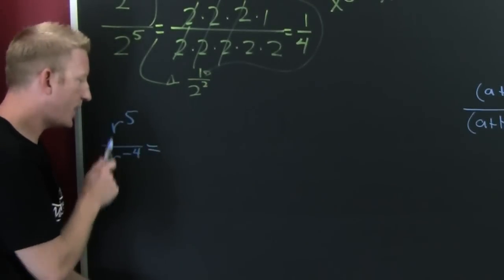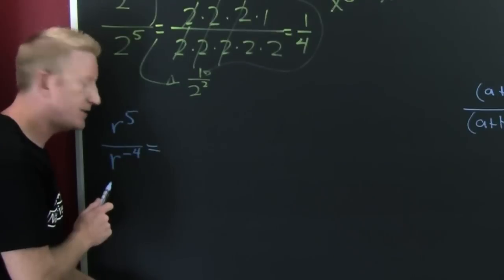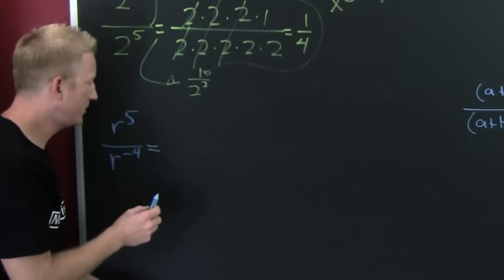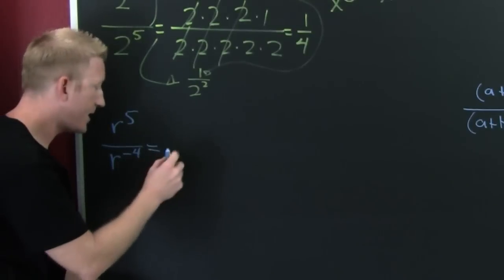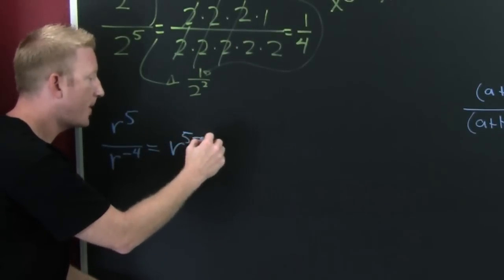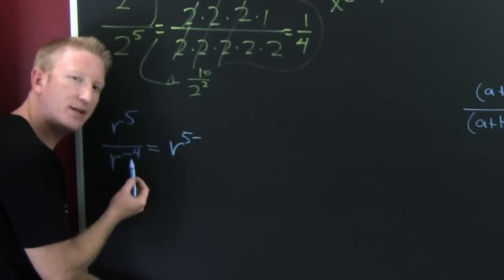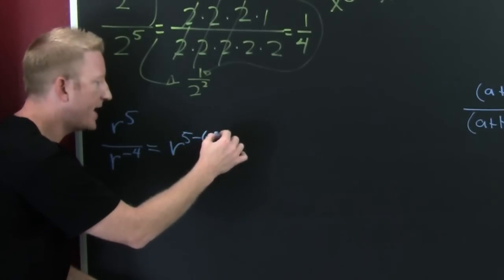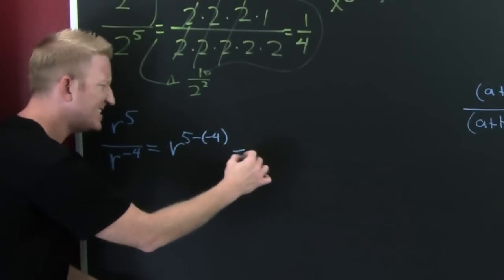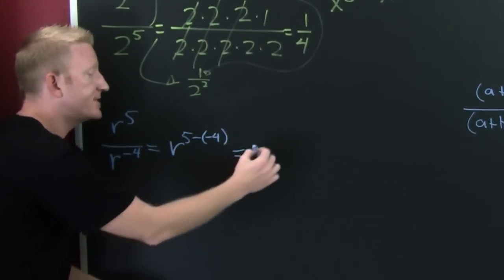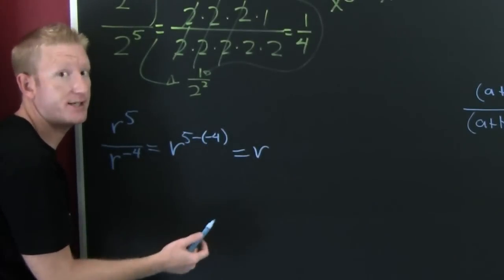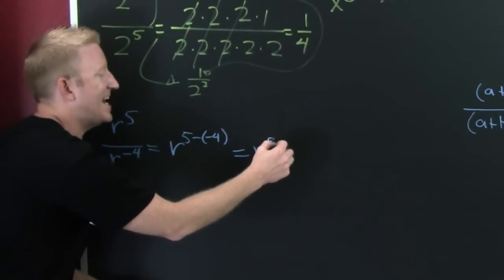Do I have the same base? Yes. Am I dividing? Yes. So then I can subtract. This is r to the numerator — 5 minus the denominator. But here that denominator is minus 4. So then this is going to be r to the 5 minus a minus 4, which is 5 plus 4, which is 9.